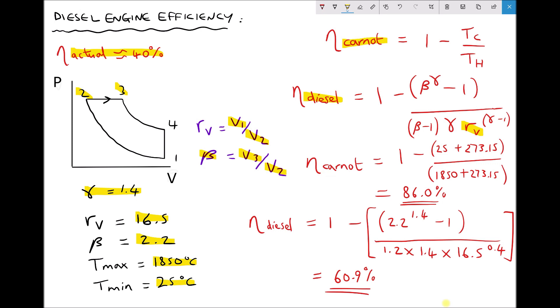So as we can see here, when we calculate the Carnot efficiency, we get a much higher percentage efficiency. And that's because the Carnot efficiency is the absolute maximum efficiency of any heat engine, not just an internal combustion engine as we see here.